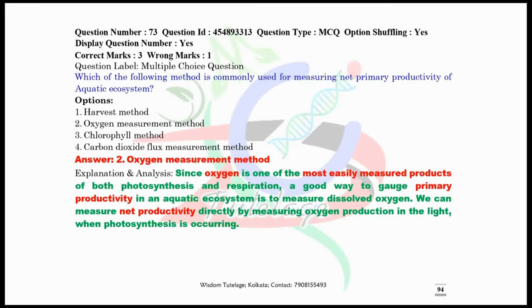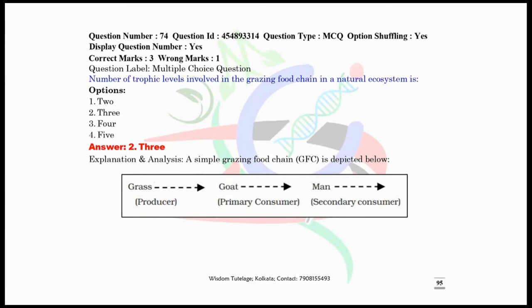Question number 73, which of the following method is commonly used for measuring net primary productivity of aquatic ecosystem? The correct answer is option number two, oxygen measuring method. This is the most easily measured method. Now question number 74, number of trophic levels involved in the grazing food chain in a natural ecosystem is three. I have given here the grazing food chain in a diagrammatic way.